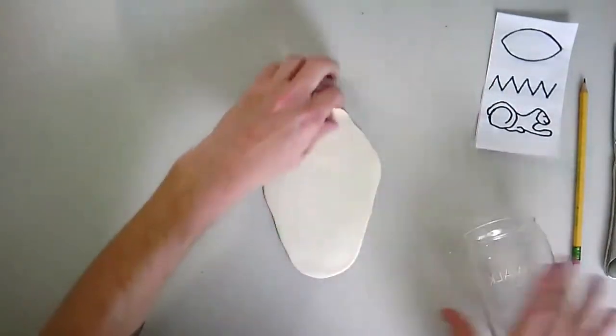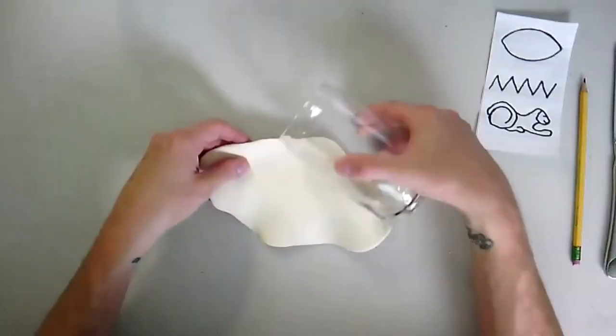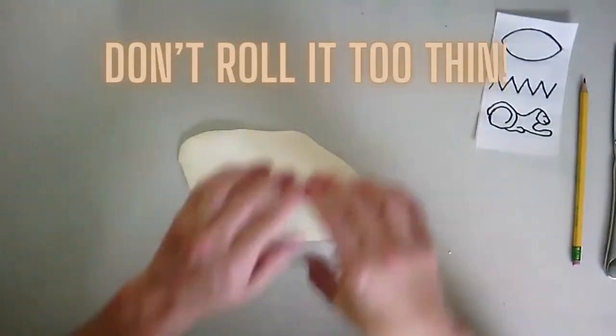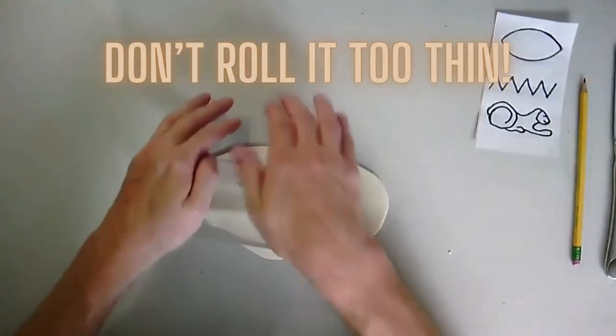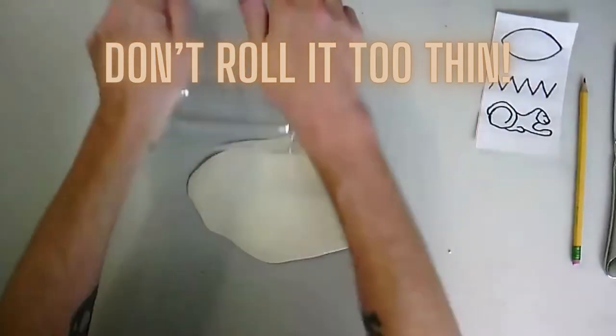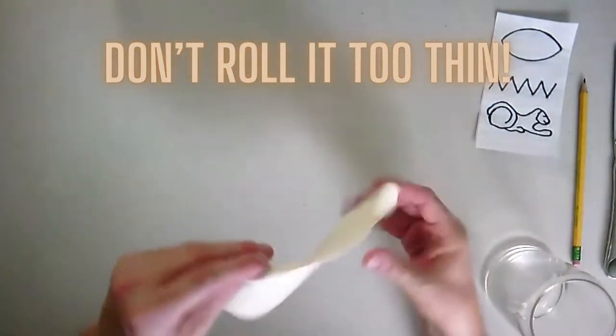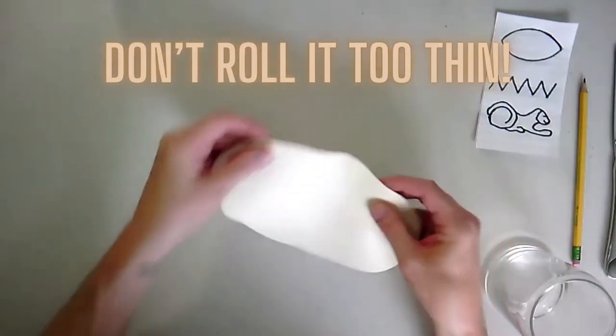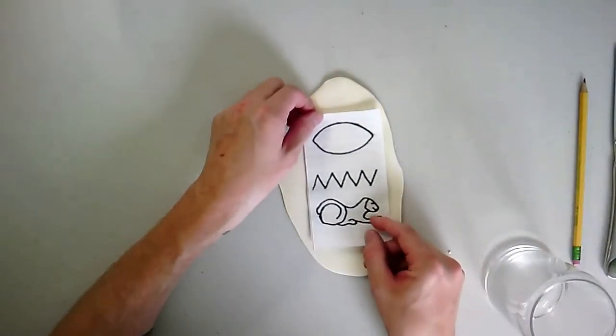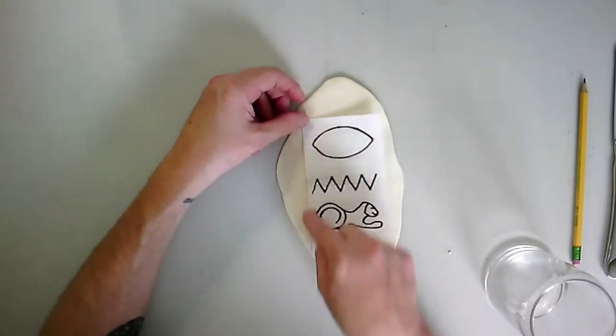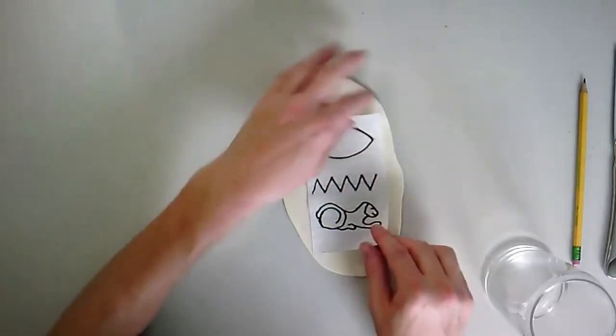You don't want to get too thin. You want to have enough backing so you can write your hieroglyphs in there. Let's see about the thickness there. I'm going to check and see if I have enough space. So that looks pretty good. I want to have enough room around the edges that I can cut my tablet out.